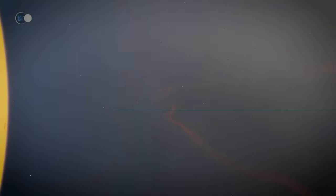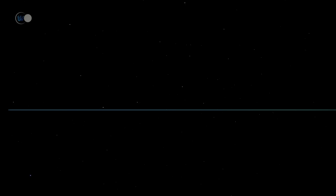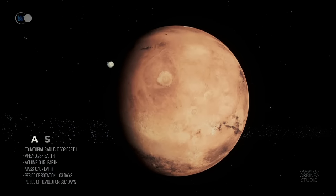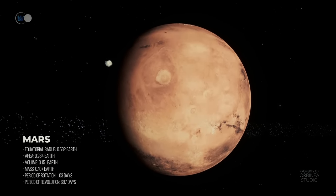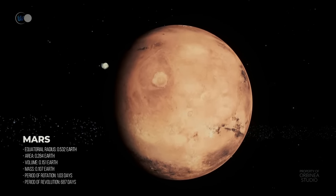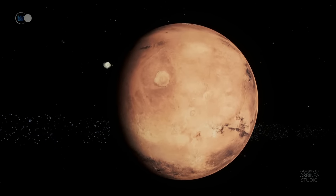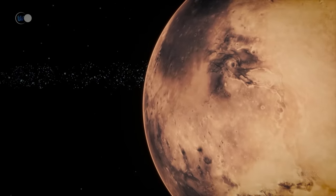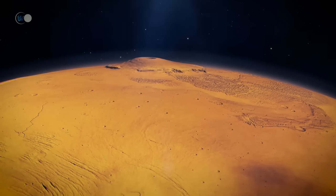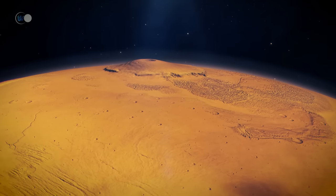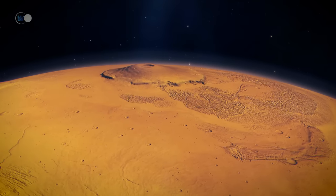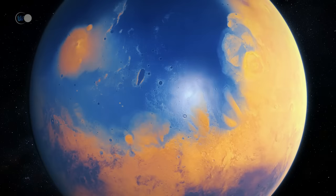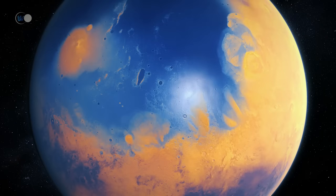Mars comes in fourth from the Sun. Its diameter of just over 6,700 kilometers or 4,200 miles is twice as small as Earth's. It has a thin atmosphere, containing mainly carbon dioxide. Its unstable climate leads to the formation of ice caps. Many extinct volcanoes culminate on its surface, including Olympus Mons. It is one of the highest known landforms in the solar system, with a peak reaching over 21,000 meters or 69,000 feet.